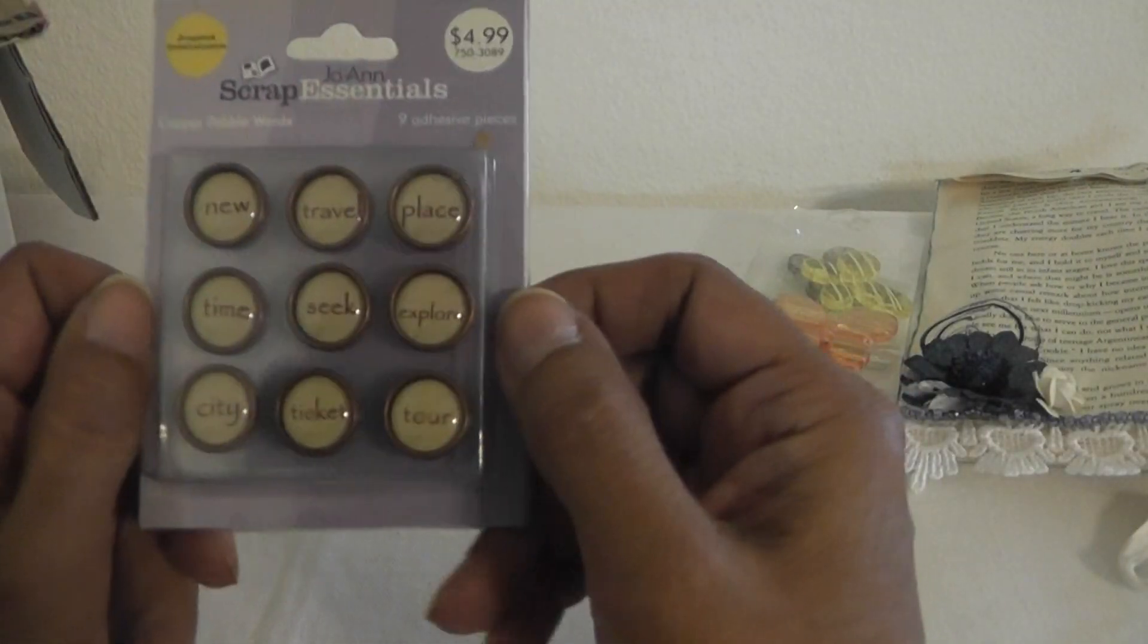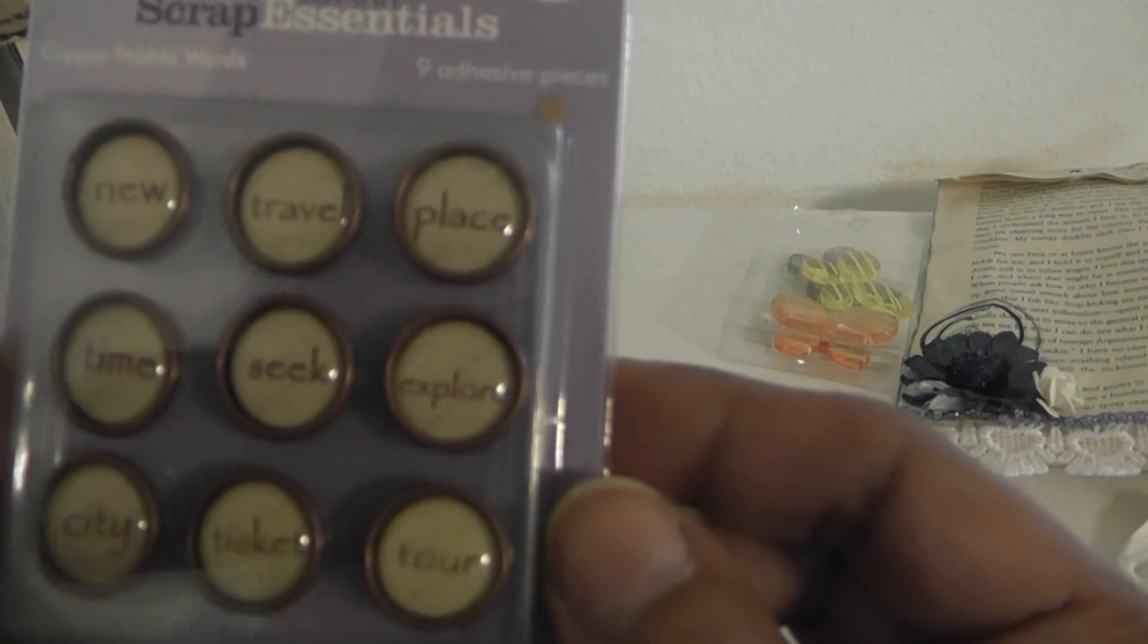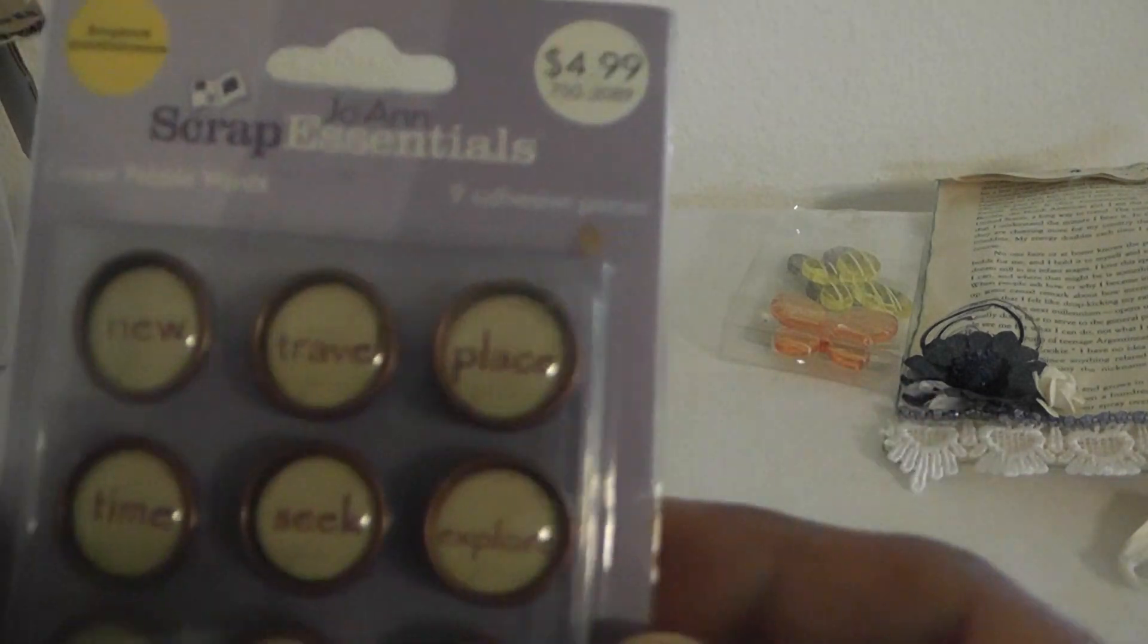And what else do I have here? She sent me some scrap essentials from Joanne. They're like word brads. Copper pebble words. Those are cool.